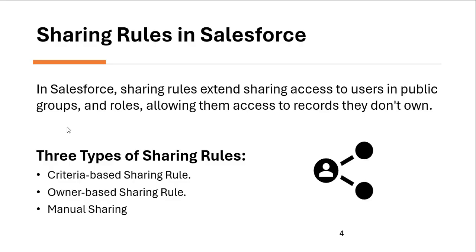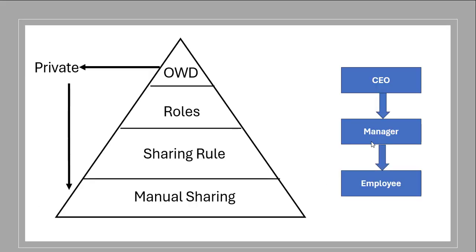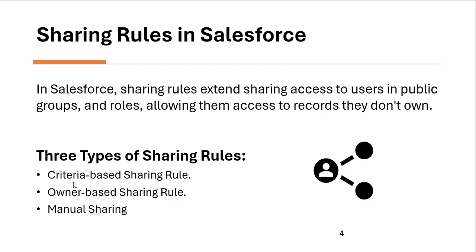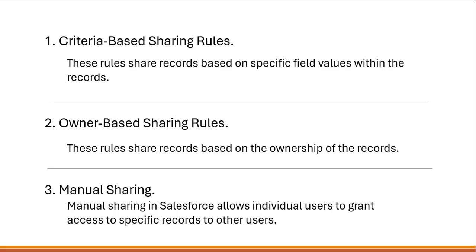In Salesforce, sharing rules extend sharing access to users in public groups and roles, allowing them access to records they don't own. For example, a record owned by the manager role that an employee cannot see can be made accessible through sharing rules. There are three types of sharing rules: criteria-based sharing rule, owner-based sharing rule, and manual sharing.